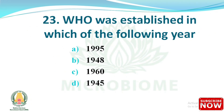Next question: WHO was established in which of the following years? Options are: 1995, 1948, 1960, 1945. The right answer is option B: 1948. The World Health Organization is located at Geneva, Switzerland. It was formed on 7th April 1948.